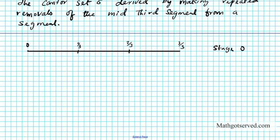Now to generate the next stage, all we have to do is eliminate the middle third. We take out this middle third right here, and we're going to be left with this segment on the left and that segment on the right. This is stage 1 of the counter set.